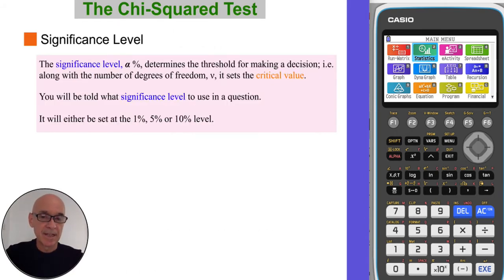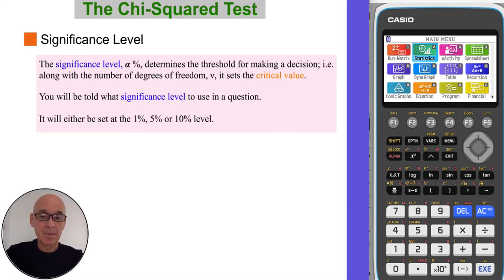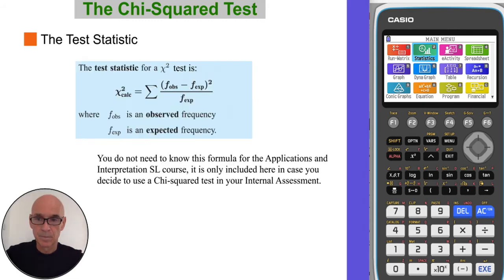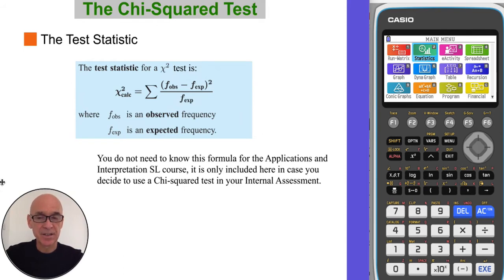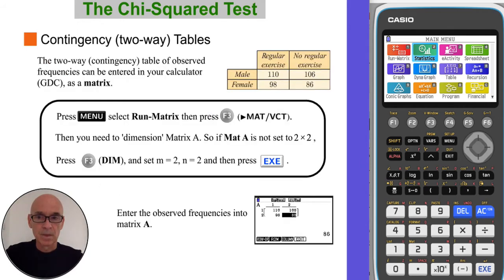The significance level determines the threshold for making our decision. Along with the number of degrees of freedom, it sets the critical value. You will be told what level of significance to use in the question; it'll either be 1%, 5%, or 10%. I've included the test statistic formula here, but you don't need to use it because we're going to calculate the test statistic on our calculator. It's included in case you choose to do a chi-squared test in your internal assessment.